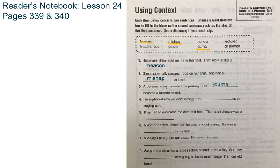Number four: He explained why we were wrong. He blank us on staying safe. When somebody is telling us about being safe, we have the word lectured. One definition for lecture is to talk seriously or reprovingly to someone, meaning you're telling them or reprimanding them. So number four is he lectured us on staying safe.